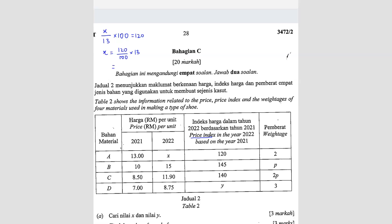Next, you want to find Y. So Y is: 8.75 over 7 times 100 will give you Y. From here we can find both. So your X value, you should get RM15.60, and the Y value, you should get 125.